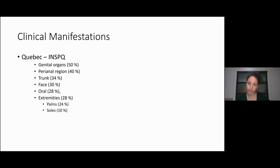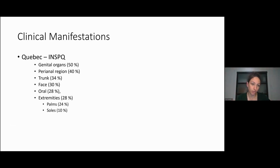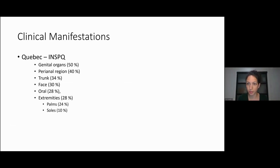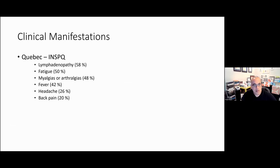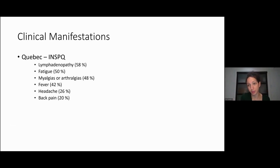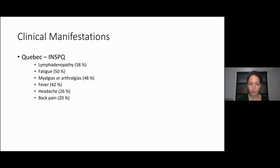Here in Quebec, 50% have had lesions in the genital area, 40% perianal, 34% on the torso, 30% on the face — so a third have facial lesions, which is not uncommon. Oral lesions are 20% and extremities also 20%, with about a quarter of patients having them on the palms; soles seem less common. For systemic symptoms, some patients have none at all, but many do. Lymphadenopathy, characteristic of monkeypox, occurs in 58% — useful for diagnosis but not always present. Fatigue 50%, myalgias, arthralgias, fever 42–48%, and headache and back pain 20–26%. Overall, about half of patients have prodrome systemic symptoms.